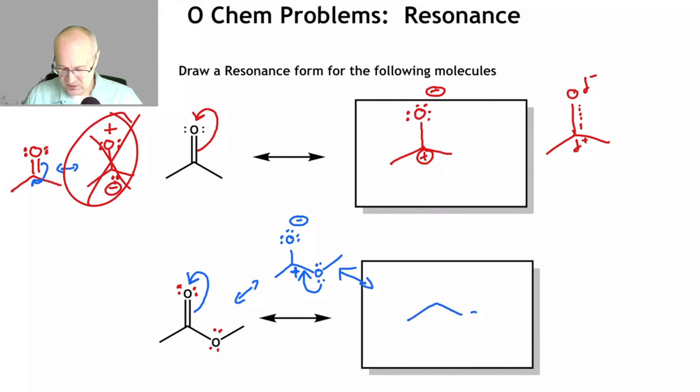Now we move these lone pairs towards that plus charge. And we'll get something that looks like this. There we go. So, now in this particular resonance form, octet, octet, octet, octets everywhere here, octets everywhere here, a sextet here.